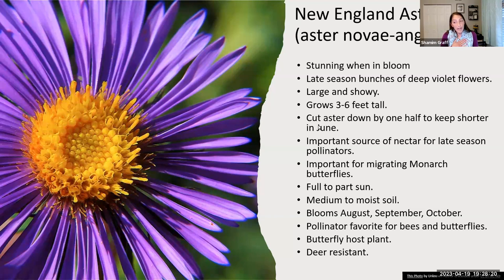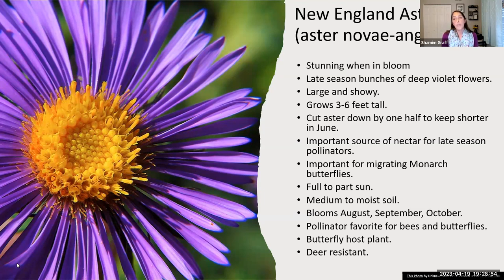New England aster is one of my late-summer favorites, and I love to pair it with goldenrods. That purple color is just absolutely stunning. They can grow up to six feet tall, but most in this area tend to be shorter — and you can help that by cutting them back in June before they flower. They're really important for migrating monarchs and other birds and insects. Because they're such a late-season flower, they're a great rest stop for pollinators. They like full to part sun and medium to moist soil.